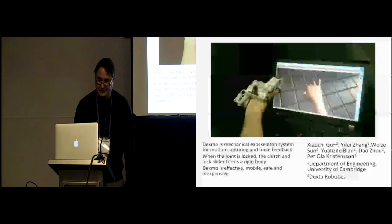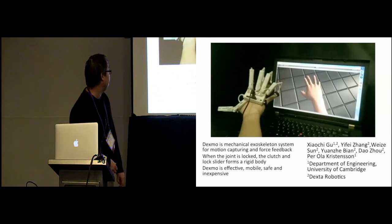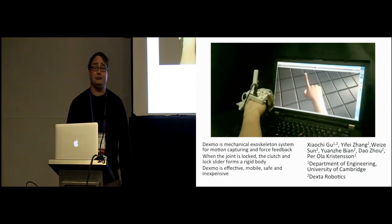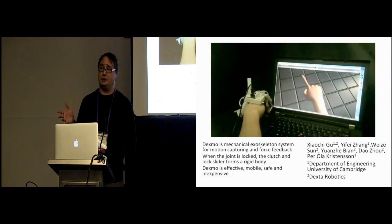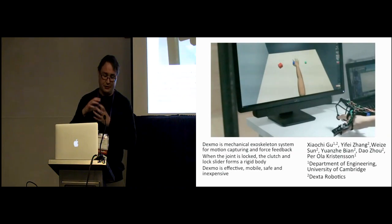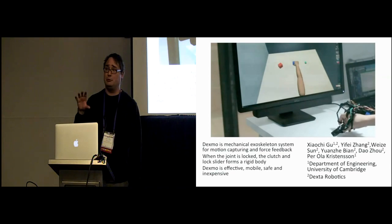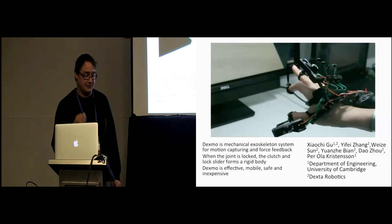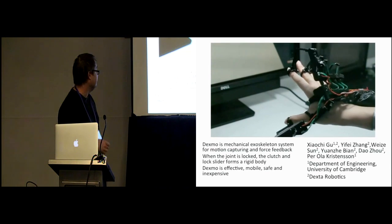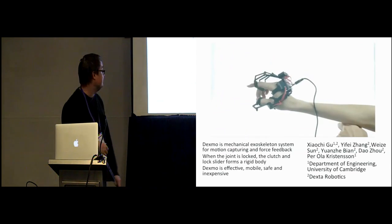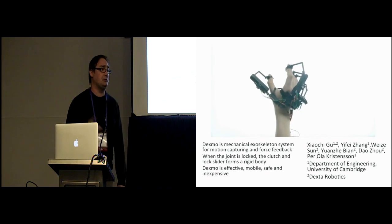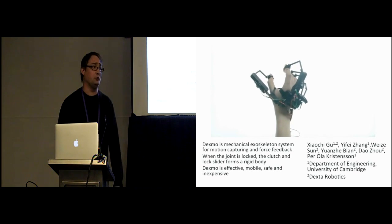And this is basically Dexmo. I want to show you a longer video here while I close off. So it's a mechanical exoskeleton, and it produces what we call active-passive feedback. So rather than re-appropriating physical devices as we have heard before, we basically lock the exoskeleton in place, and therefore provide passive haptics via an active mechanism, a mechanical mechanism. And we claim that it's effective, it's definitely mobile, it's safe, and it can be mass-produced, turned into manufacturing instructions and be mass-produced and sold at a sensible retail price.